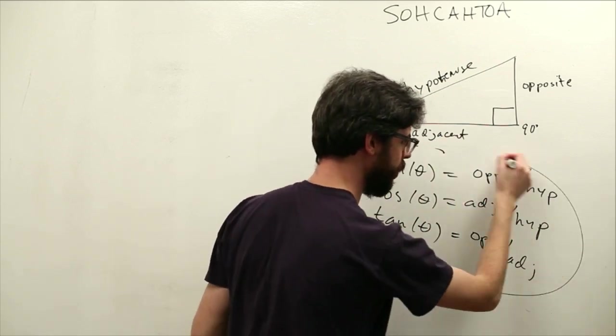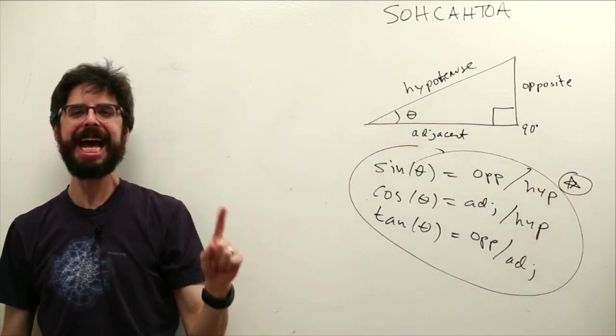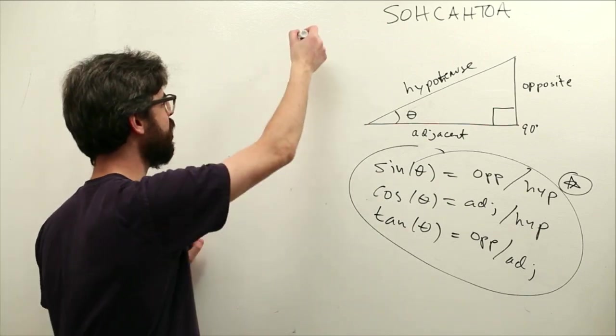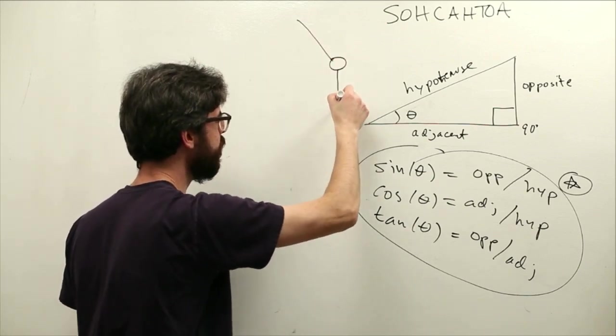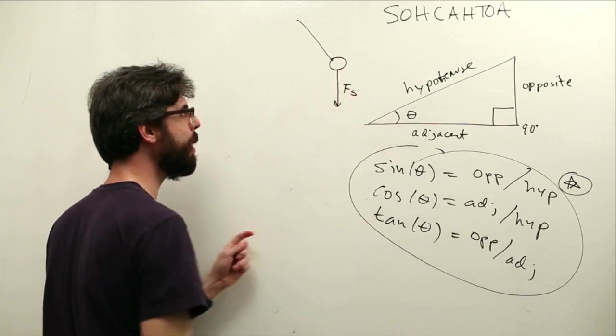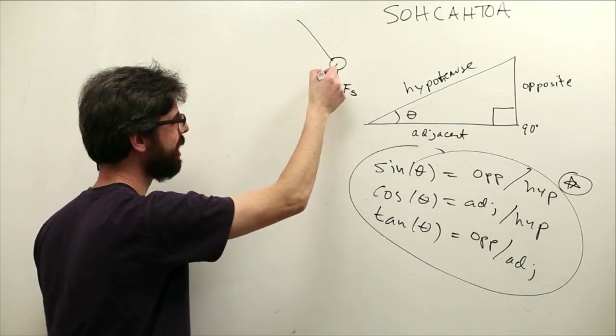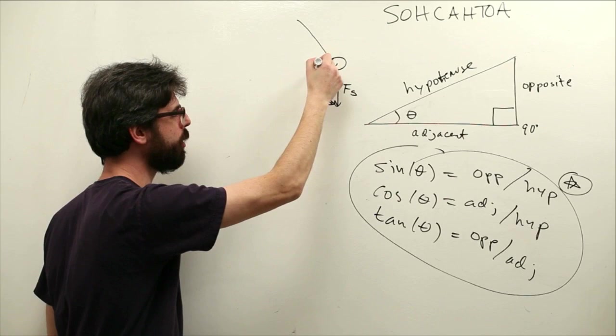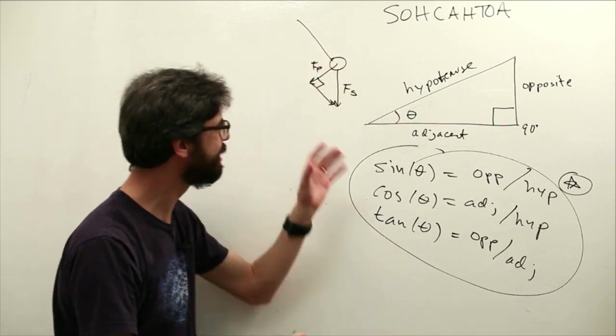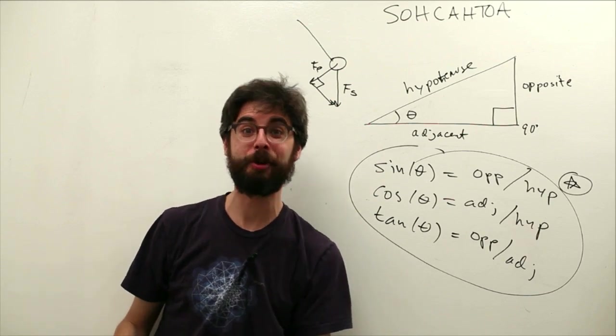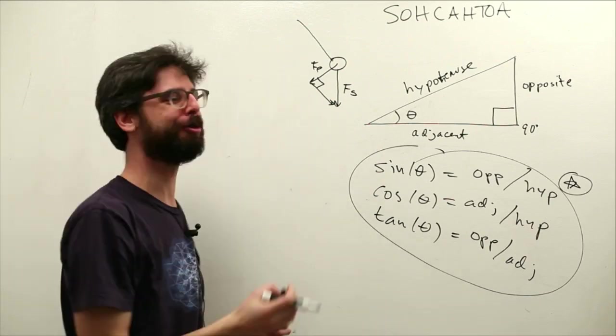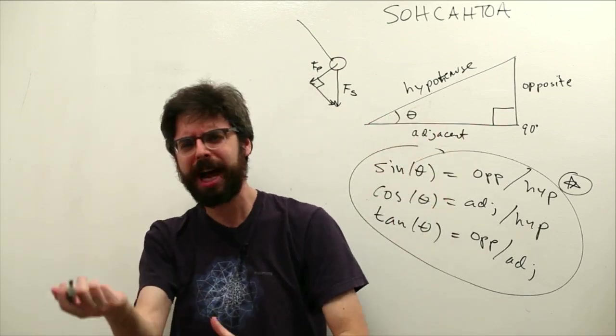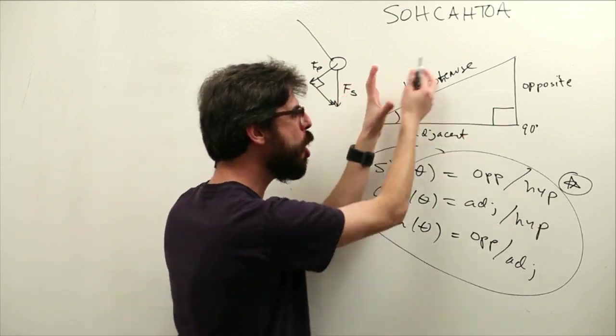So these formulas come up again and again in many different scenarios. One scenario in particular that we're going to look at not in this video is a swinging pendulum. If you think this is a pendulum, this is the force of gravity on the pendulum pointing down. But this is the direction the pendulum's going to move. You can see we've made a right triangle here. We need the force of the pendulum, which is a component. So we're going to do lots of stuff. There's going to be lots of diagrams involved and things that we're going to make that suddenly have a right triangle in them.